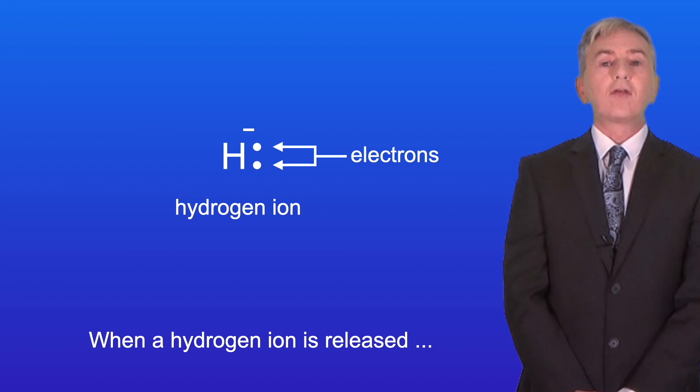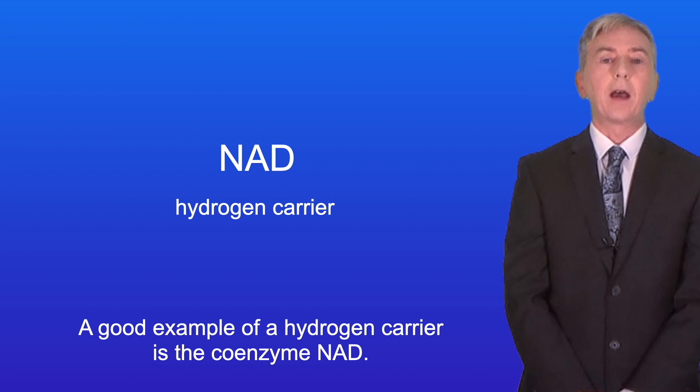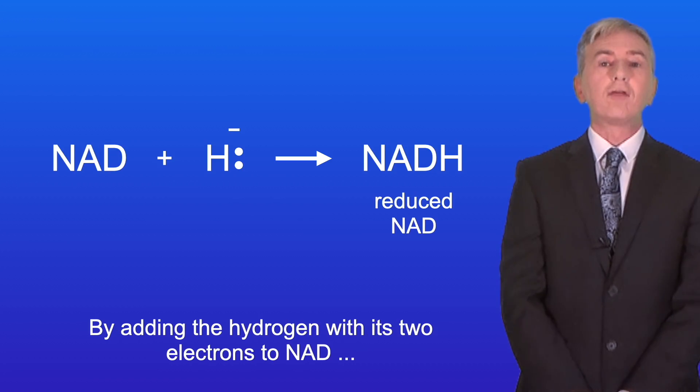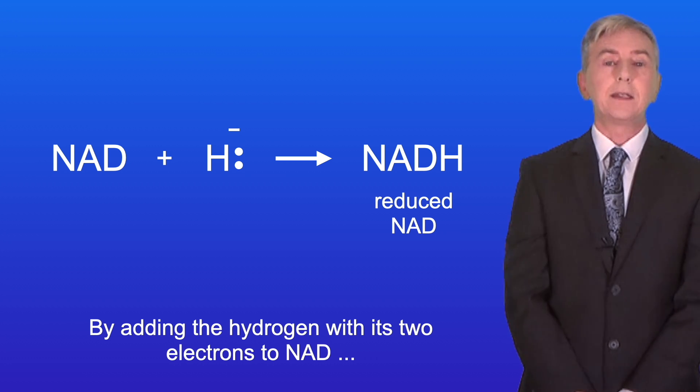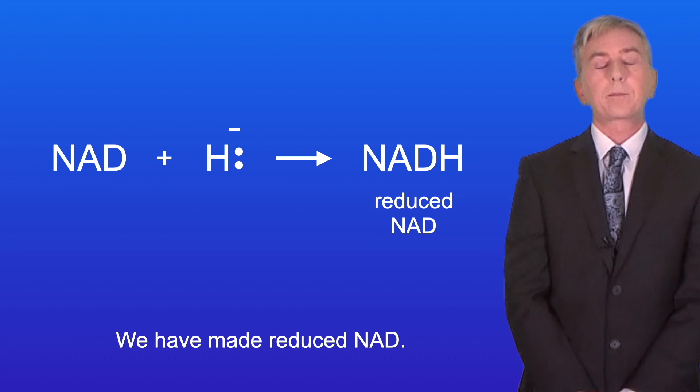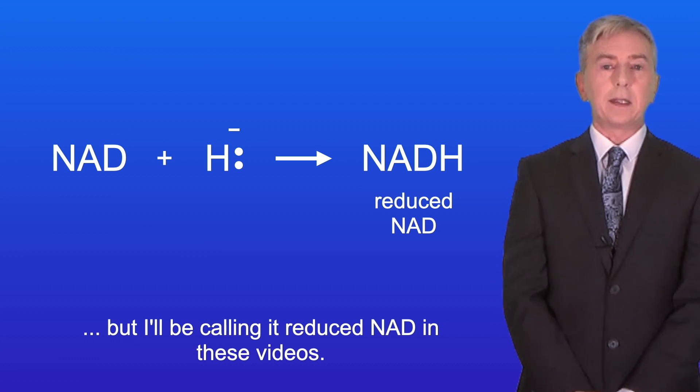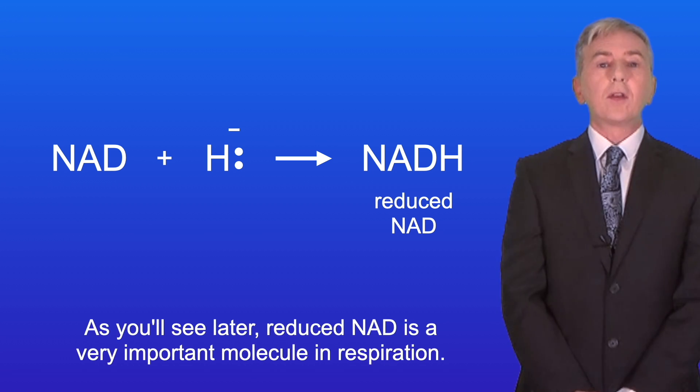Now when a hydrogen ion is released, it's added to a molecule called a hydrogen carrier. A good example of a hydrogen carrier is the coenzyme NAD. By adding the hydrogen with its two electrons to NAD, we carry out a reduction reaction, and we've made reduced NAD. Reduced NAD is also called NADH, but I'll be calling it reduced NAD in these videos. And as you'll see later, reduced NAD is a very important molecule in respiration.